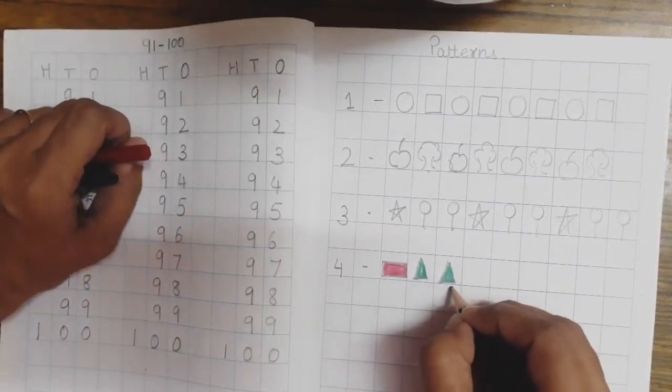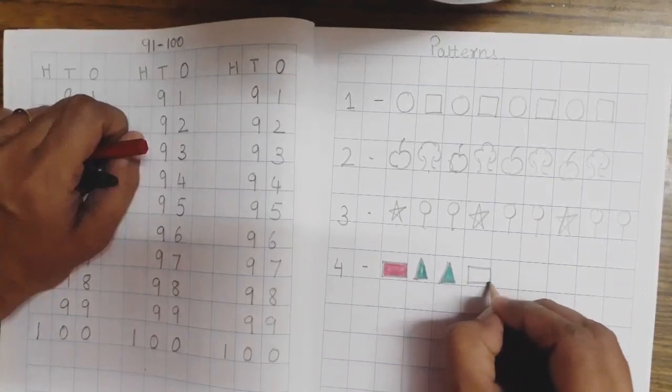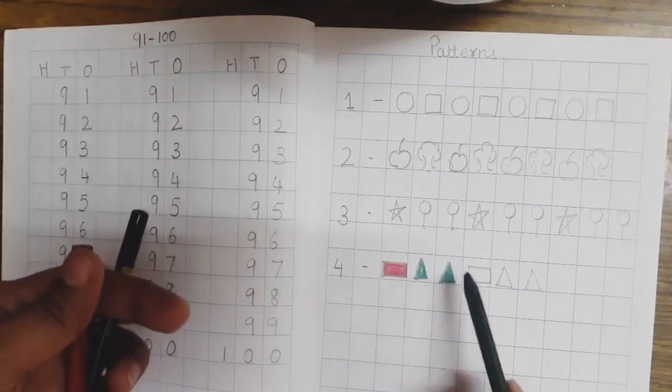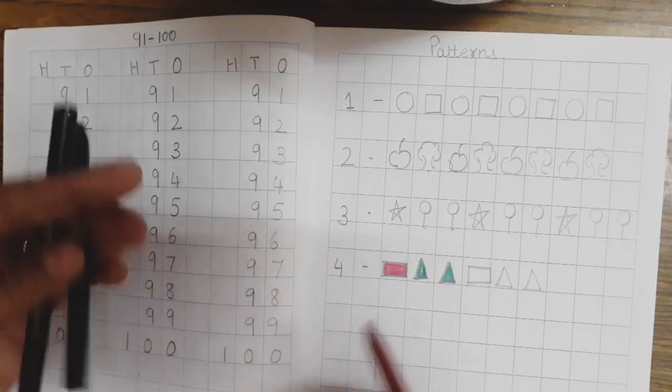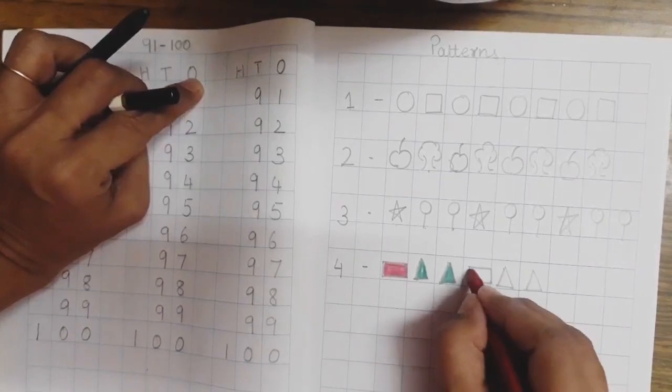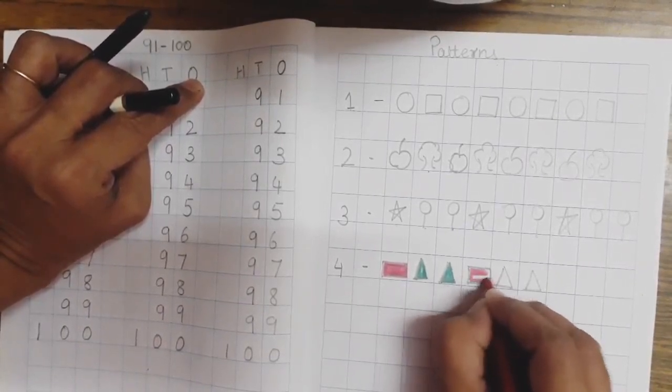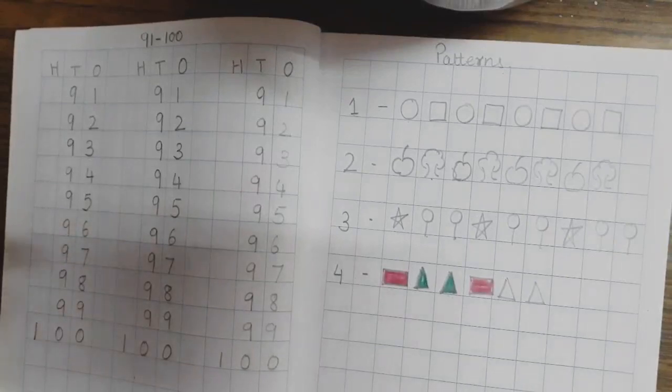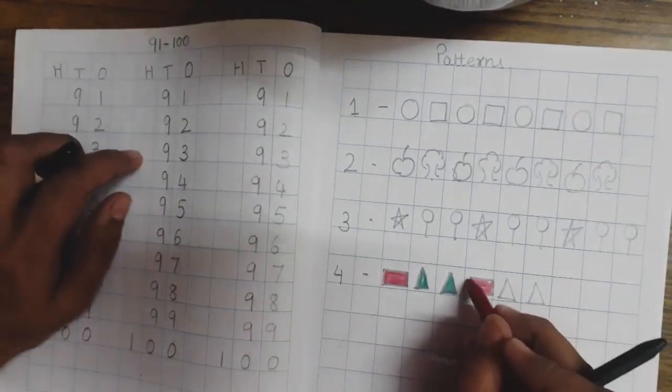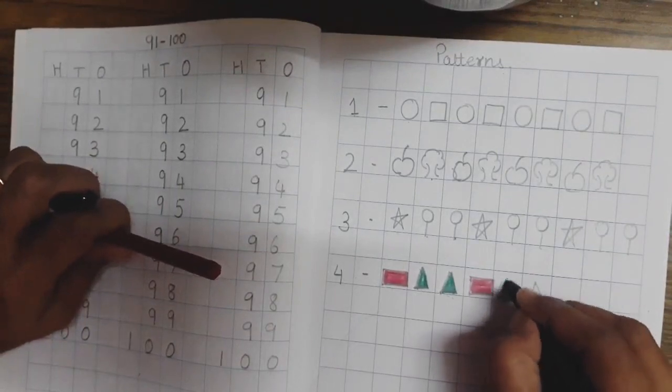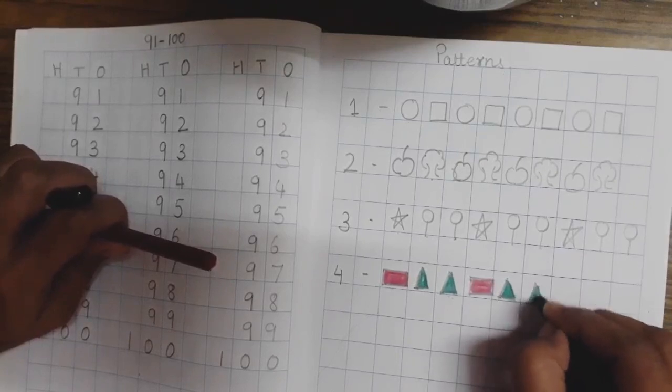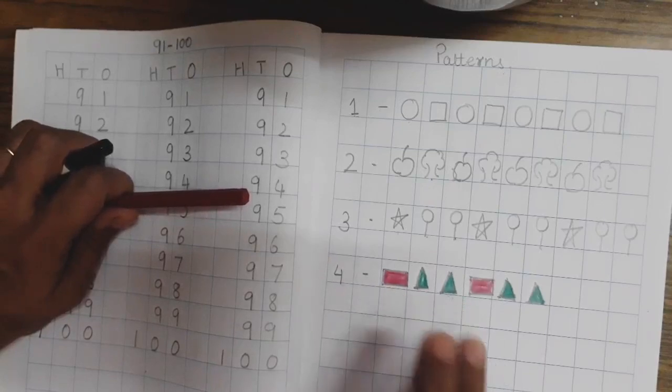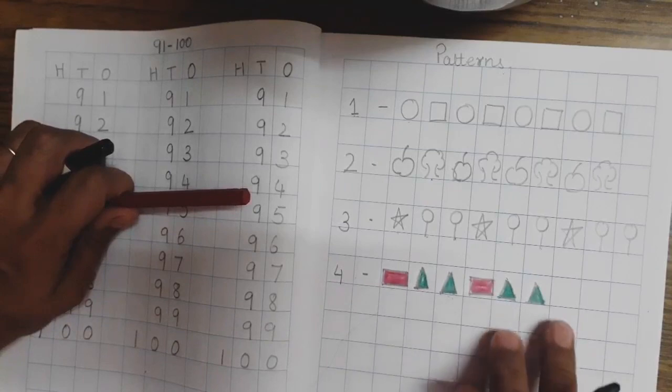1 rectangle. Yes. And then, 2 triangles. So, now, can I color rectangle with green? No. Because here, we have colored it with red. So, I am going to draw it with red color. And after red rectangle, we are going to color triangle with green. So, the pattern is red rectangle, 2 green triangles, 1 red rectangle, 2 green triangles.